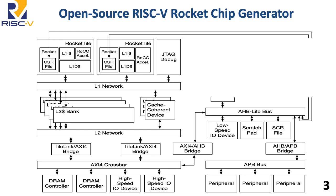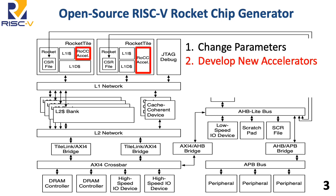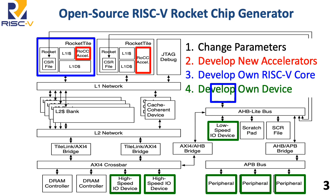At Berkeley, we didn't just develop RISC-V cores; we also developed a complete open-source SOC generator we called RocketChip. RocketChip contains a library of components, including processors, caches, coherence managers, interconnect, and I/O devices. RocketChip is highly configurable and parametrizable, supporting a great deal of research and experimentation. You can modify parameters, develop new accelerators, develop your own RISC-V core, or develop your own device in the process of assembling an entire SOC. RocketChip is now maintained by SiFive with the Chips Alliance, but is widely used in academia and other companies, and has even been used to develop commercial products.